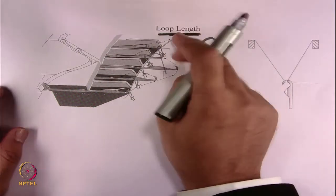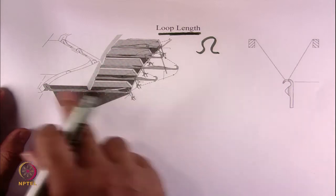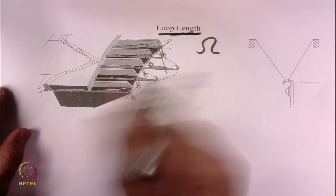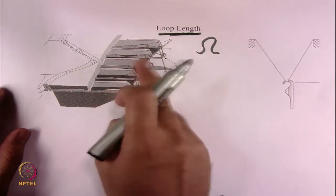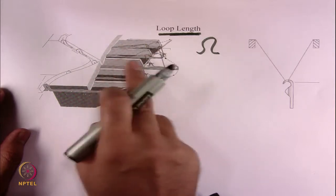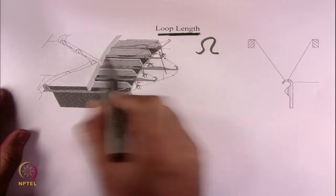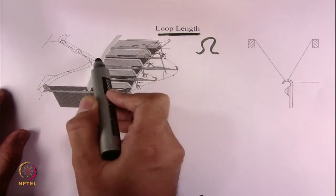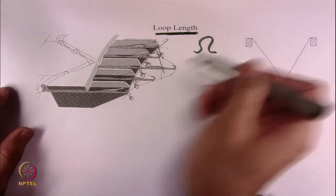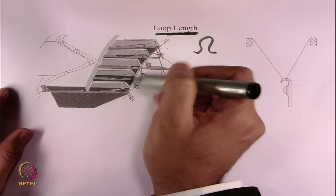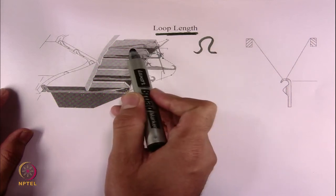We have seen that these loops are created on the machine. On the machine, we have needles which are placed on the tricks — the needles are placed on the bed between the trick walls. These walls are the trick walls, and between these 2 trick walls the needles are placed. They are pulling the yarn inside the bed. To calculate the loop length, we can find out how much the needle actually pulls the yarn inside the bed.